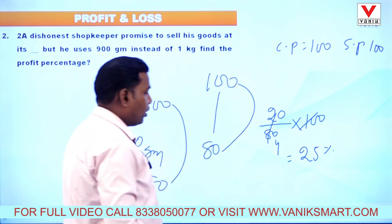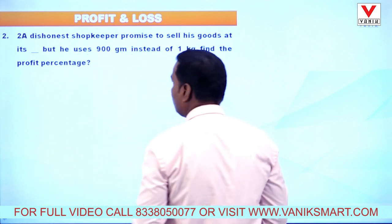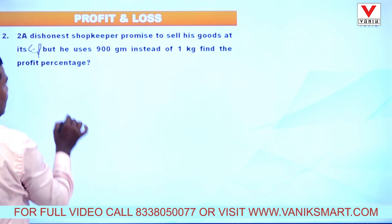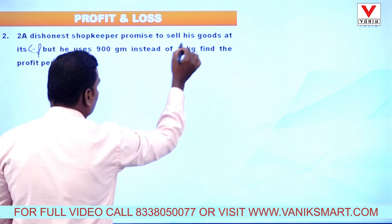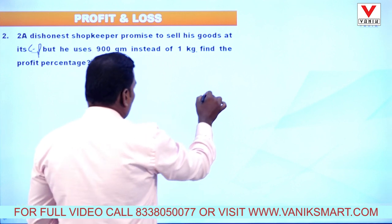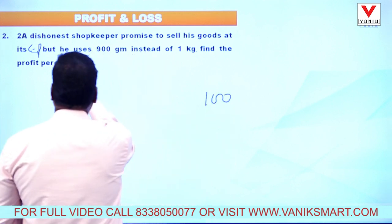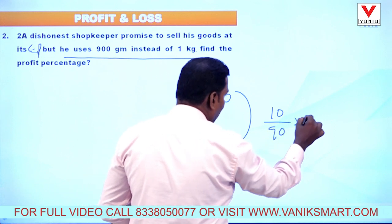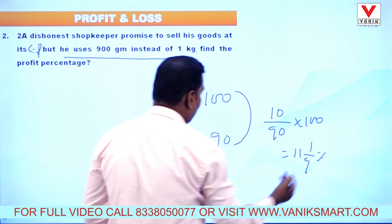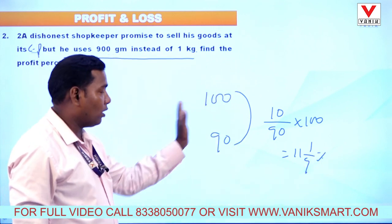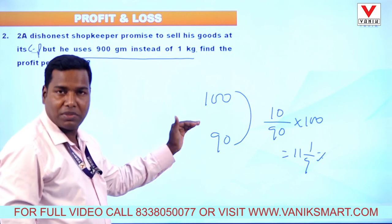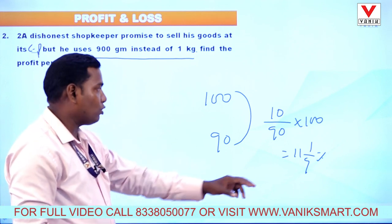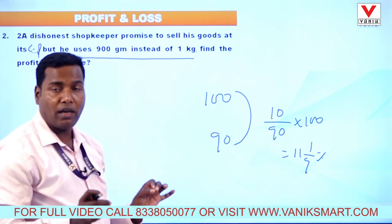Question 2: A dishonest shopkeeper promises to sell his goods at cost price, but uses 900 grams instead of 1 kg. Find the profit percentage. Suppose cost price is 100. He uses 900 grams — cost is 90 rupees. Profit is 10 rupees. Profit percentage = 10/90 × 100 = 11 and 1/9 percentage. 1000 grams cost 100 rupees; he sells 900 grams worth (90 rupees) but collects 100 rupees, profit = 10 rupees → 11 1/9 percentage.